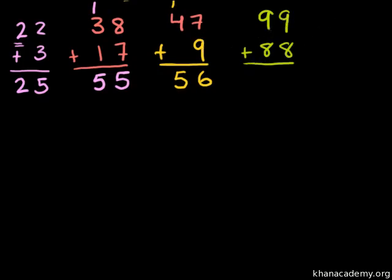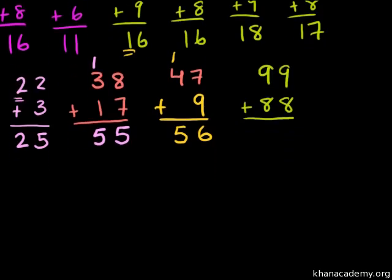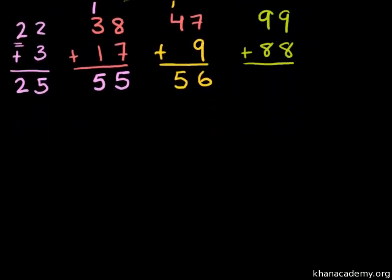We did that up here. 9 plus 8 we know already is 17. That's a good one to remember. 9 plus 8 is 17. It's always good to be able to visualize it as well. So 9 plus 8 is 17. Carry the 1.